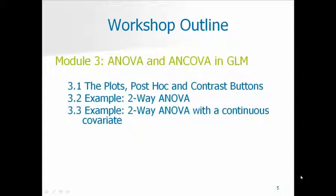Module 3 will concentrate on an ANOVA model, and we're going to talk about the options and different statements you can choose within the GLM that you would really only use if you were doing an ANOVA. SPSS is so sure, in fact, that you would only use them in a pure ANOVA model that GLM won't let you choose these buttons if you have any continuous variables in your model — it just won't run. So these are the plots, post hoc, and contrast buttons that will only work on a model with only categorical predictor variables.